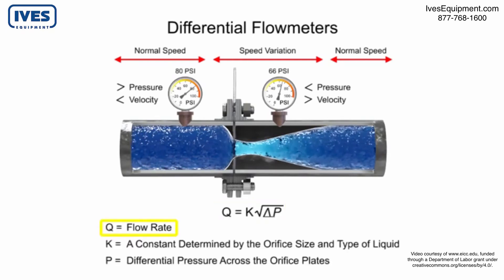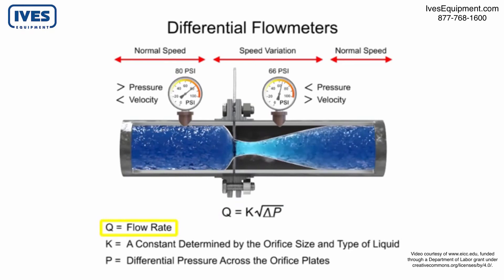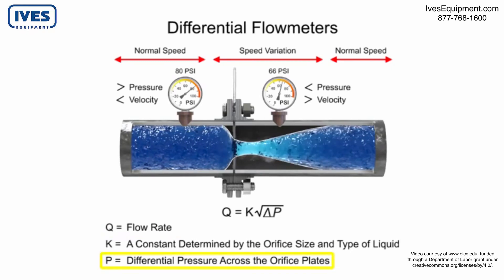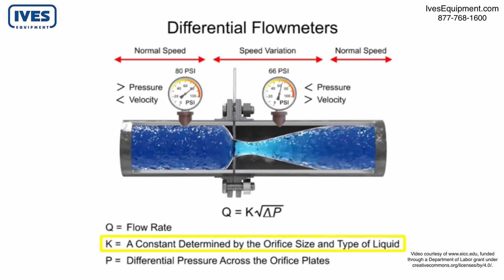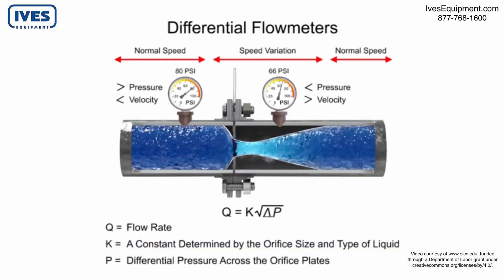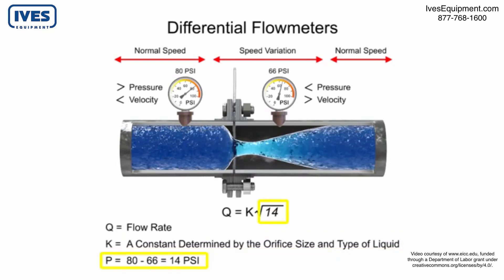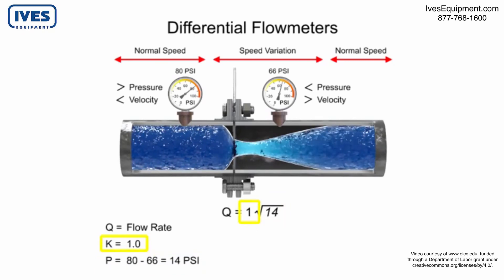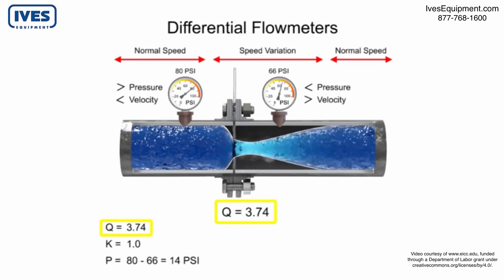The flow rate, q, of a fluid through an orifice plate increases in proportion to the square root of the pressure difference on each side multiplied by the k factor. For example, if the differential pressure increases by 14 psi with a k factor of 1, the flow rate is increased by 3.74.